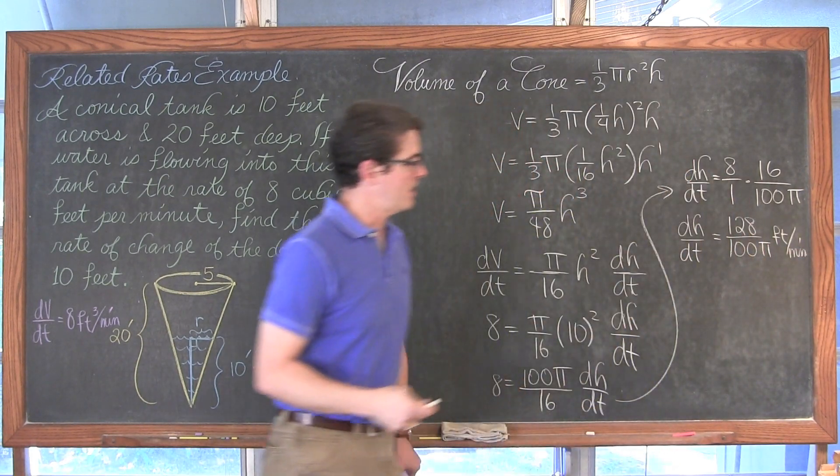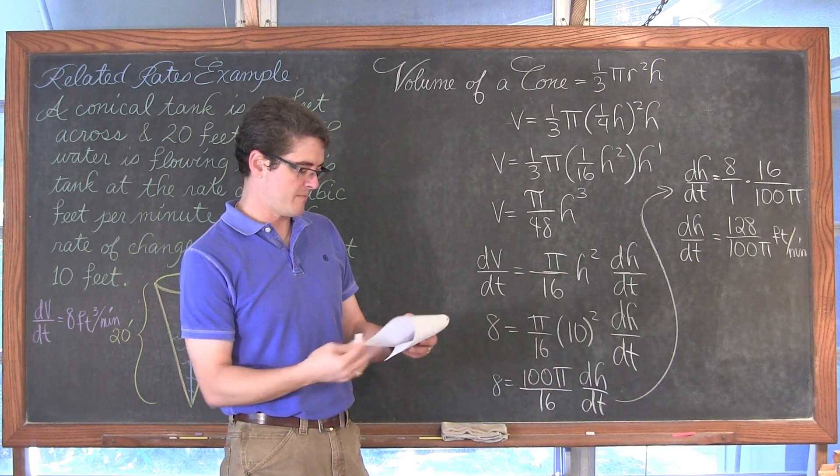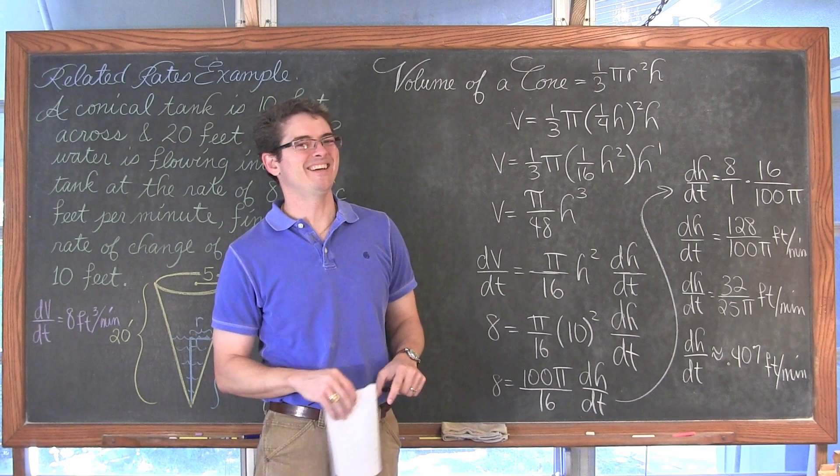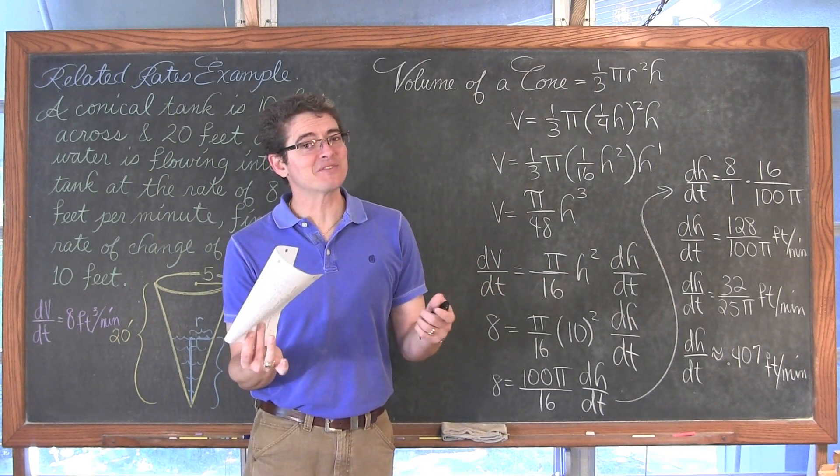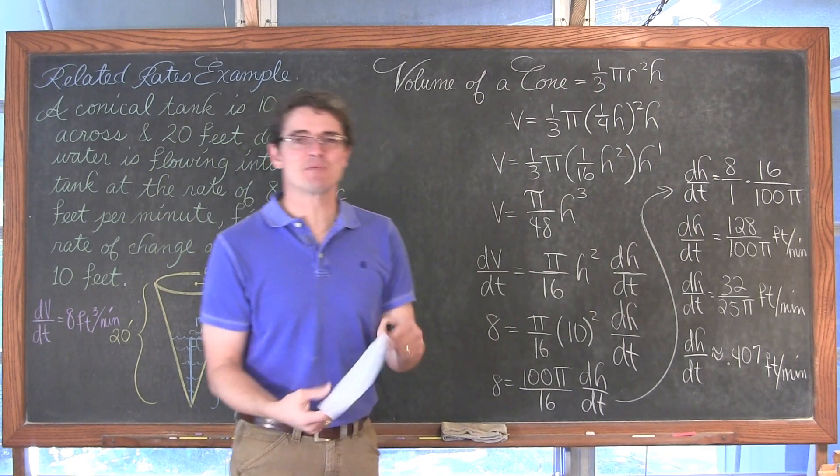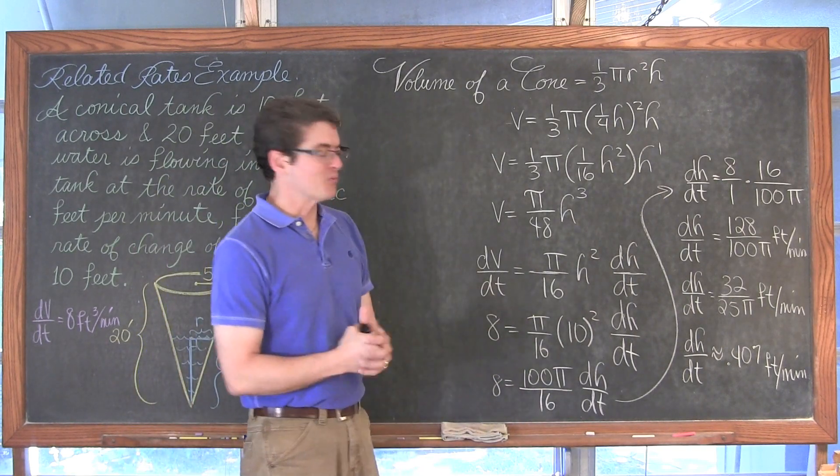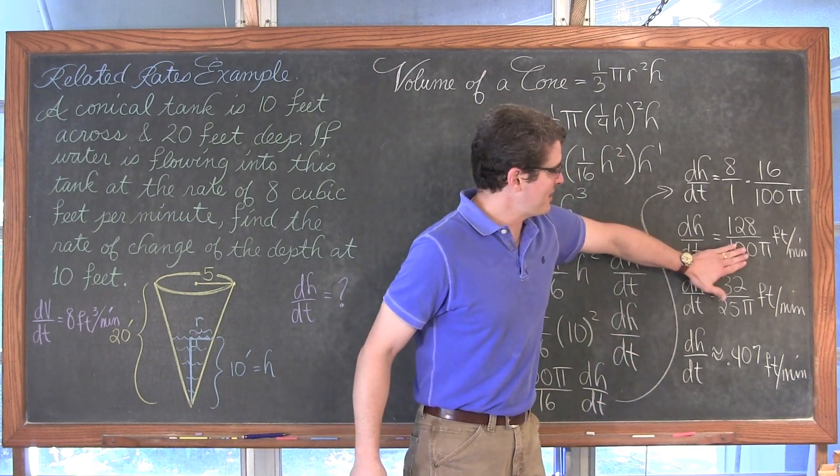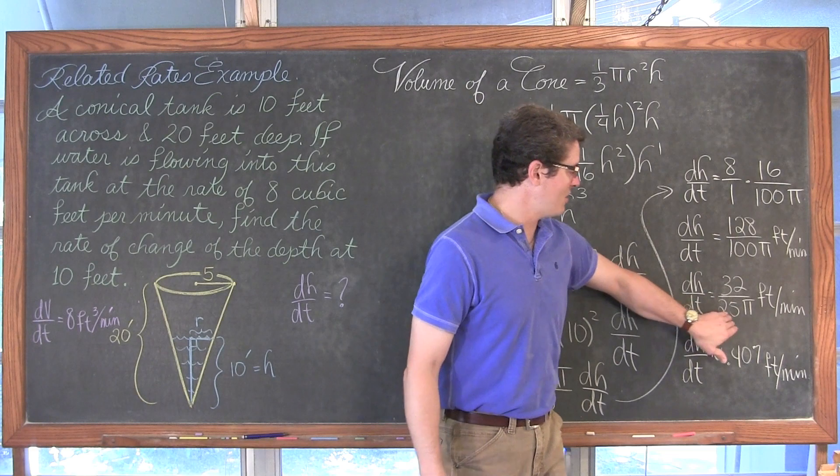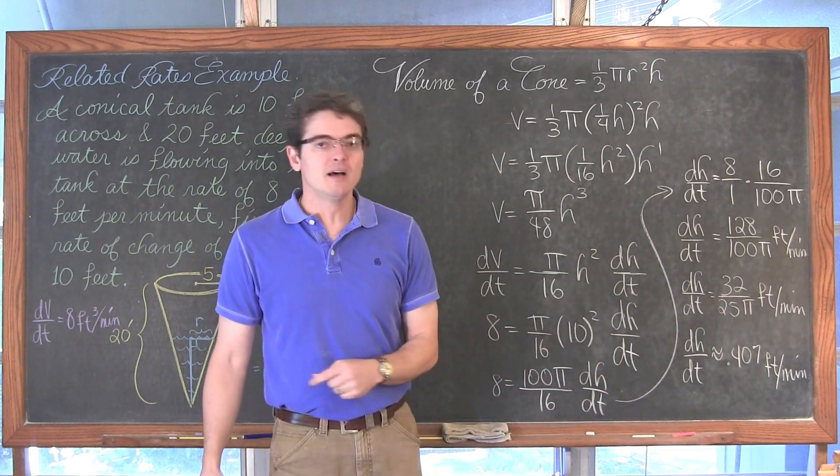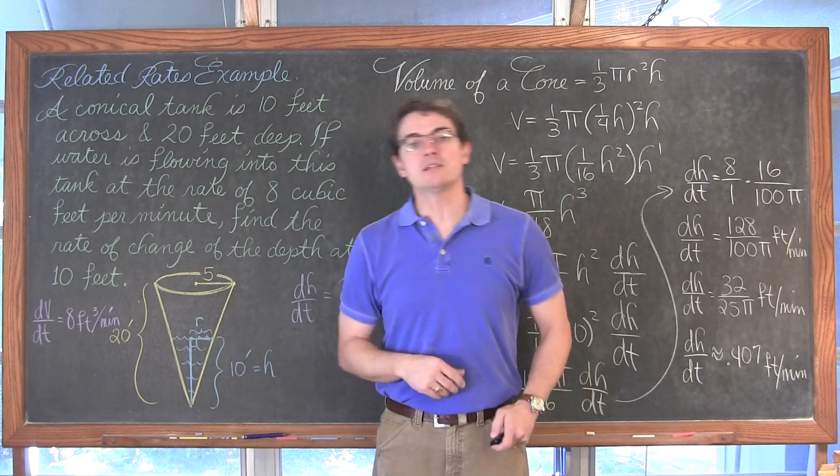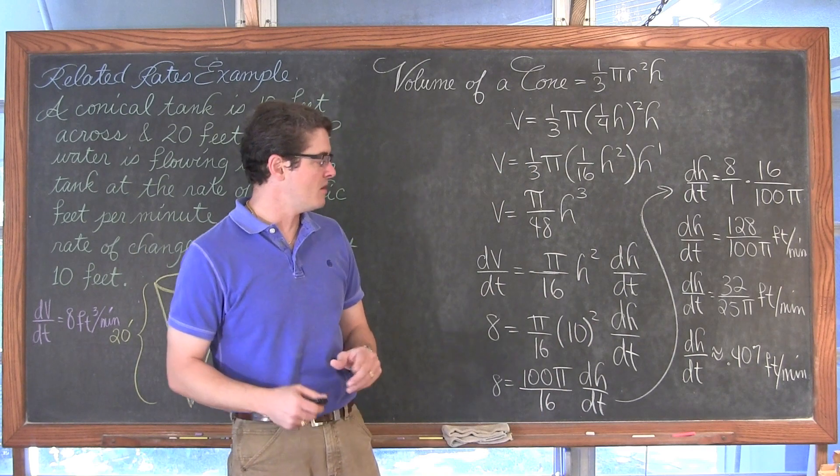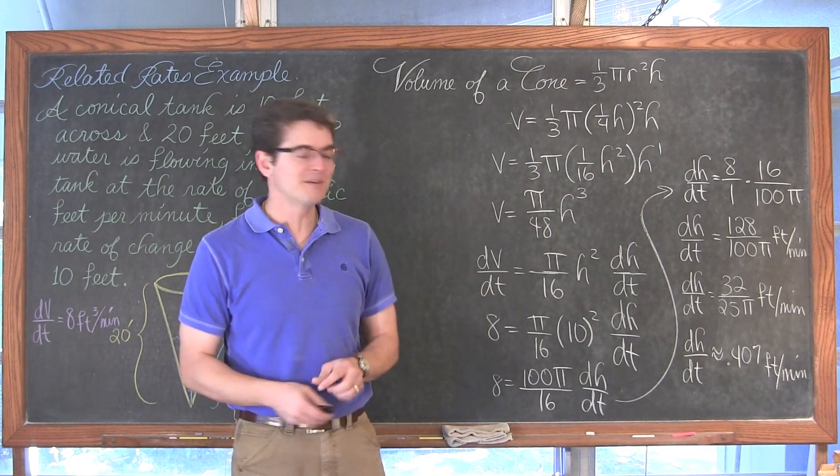And of course that 128 over 100 is reduced. Using your notes are only good if they don't have any mistakes in them. I have two decimal approximations for the rate of change. I realized one of them had to be wrong. The 128 over 100 pi reduces to 32 over 25 pi feet per minute. And that is the rate of change for the depth of the water when it is 10 feet deep. And the decimal approximation of the answer to three decimal places is 0.407 feet per minute.